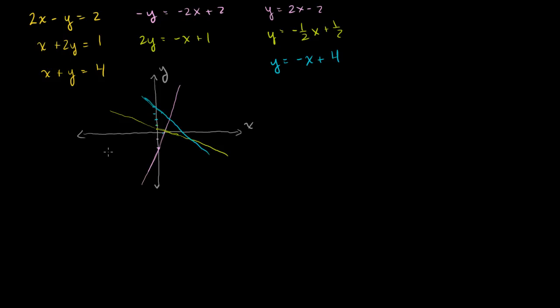I said at the beginning of this video that I want to find the intersection of these three lines. But notice, there is no intersection of all three lines. They all intersect the other two, but they don't all intersect each other in one point. We can call the system over-determined — we've over-constrained it. If I were to actually try to solve the system, I would find no solution.